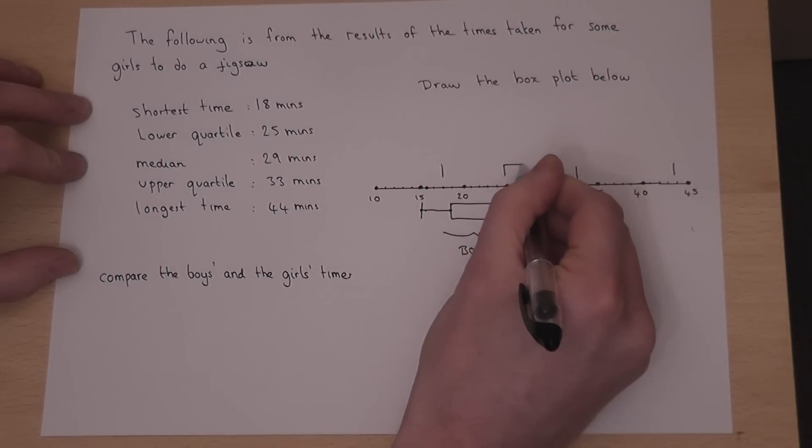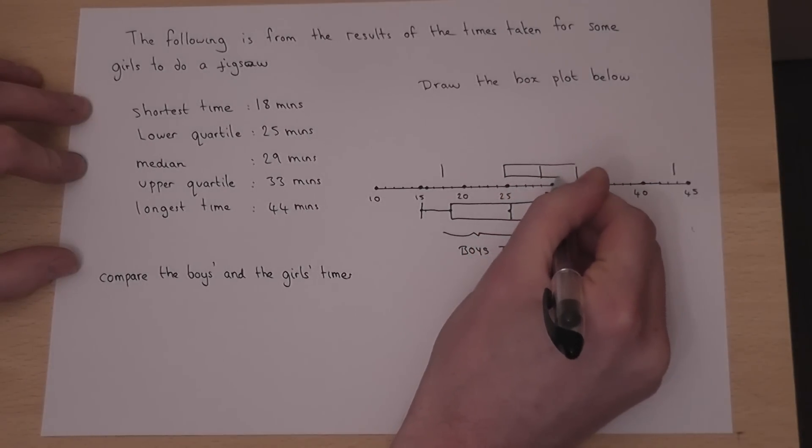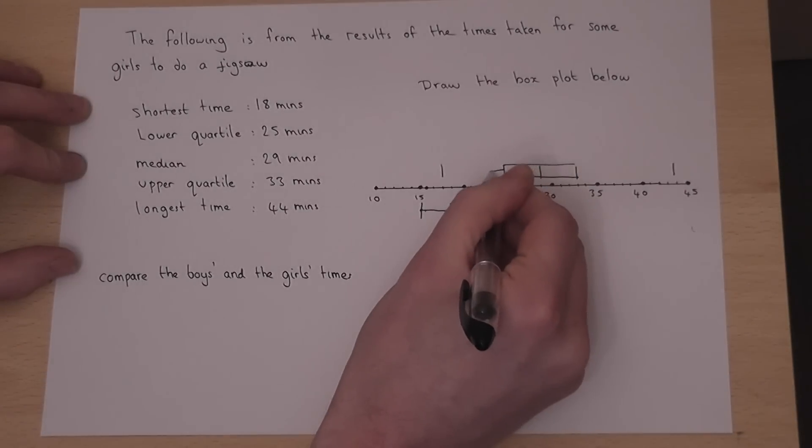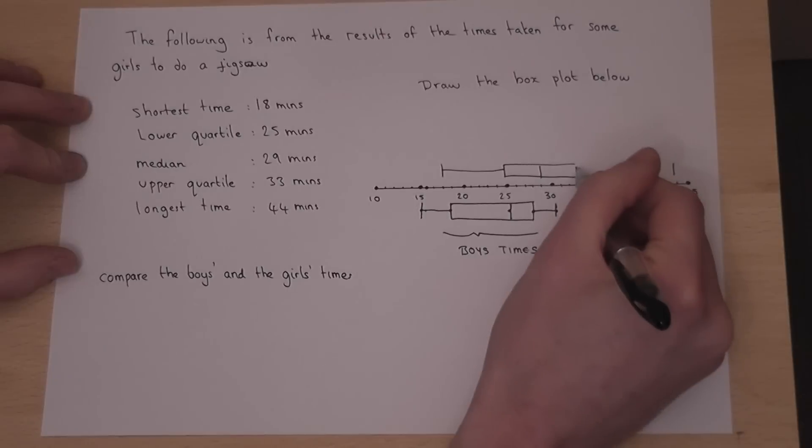I then draw a box around from the lower to the upper quartile, and then draw a line down to the lowest value, and one up to the highest value.